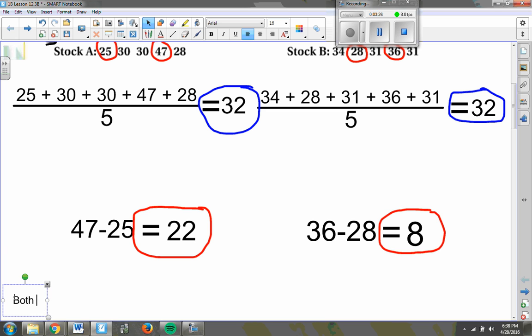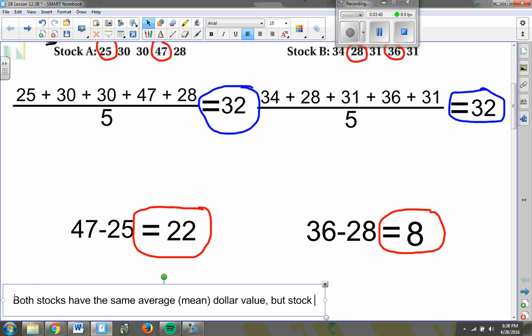I'm going to say both stocks have the same average or mean dollar value, but stock A is much more spread out, higher range, than stock B.